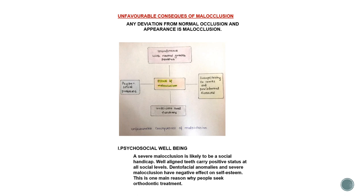Dental-facial anomalies and severe malocclusion have a negative effect on self-esteem. If a person has well-aligned teeth they are confident, but if they have severe malocclusion — crowding or supernumerary teeth — they feel handicapped and shameful. Aesthetics is the main reason people get their ortho treatment done — they want the best smile. Nowadays veneers are in trend and people are becoming more aware, getting their ortho treatment done at an earlier stage.